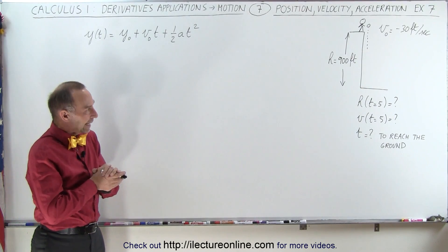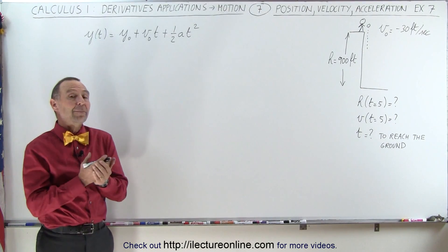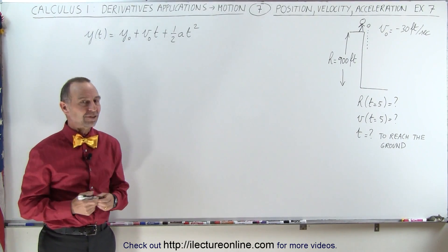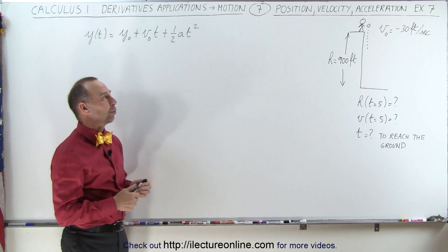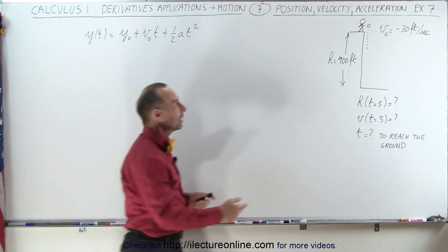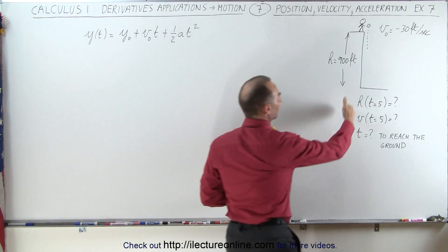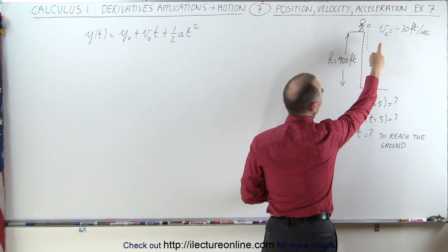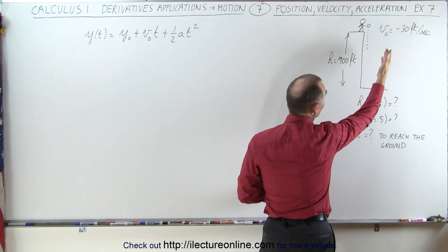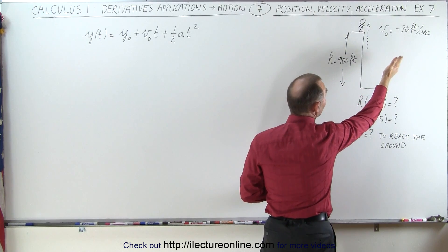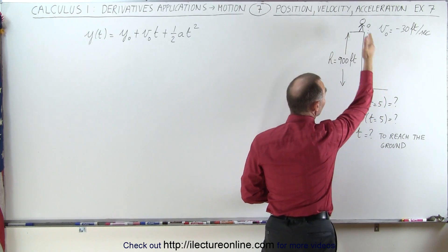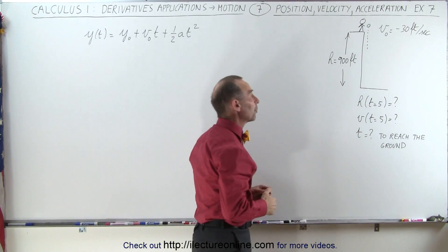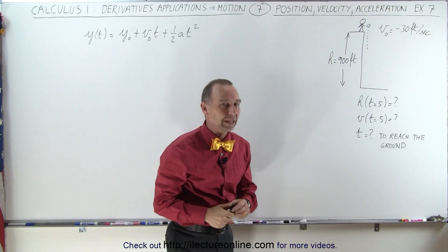Welcome to our lecture online. In this example we have something you might see in a physics class where we're dropping an object from a height of 900 feet, and we're giving it an initial velocity of minus 30 feet per second in the downward direction.